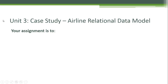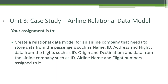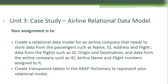Unit 3 case study: airline relational data model. Your assignment is to create a relational data model for an airline company that needs to store data from passengers such as name, ID, and address; flight data such as ID, origin, and destination; and data from the airline company such as ID, name, and flight numbers assigned to it. You will have to create transparent tables in the ABAP dictionary to represent your relational model.